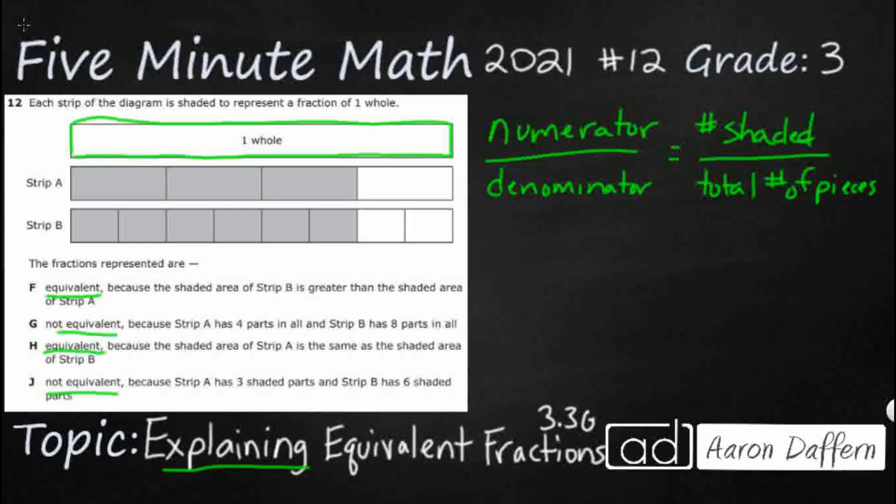So if we look at strip A, we've got one, two, three pieces shaded. So I'm going to just write that down here in this very last strip since it's white. That's our numerator. We've got three pieces shaded, and then we've got one, two, three, four pieces total. The pieces total includes the pieces that we already counted once for the number of shaded pieces. So this is the fraction three-fourths.